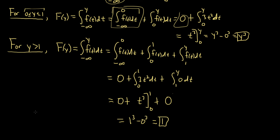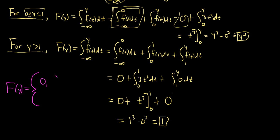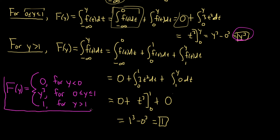Now we write the final answer. Big F(y) is a piecewise function: 0 for y less than 0; y³ for y between 0 and 1; and 1 for y greater than 1. That's how you find the distribution function given the density function for a continuous random variable. I hope this video has been helpful. Good luck.